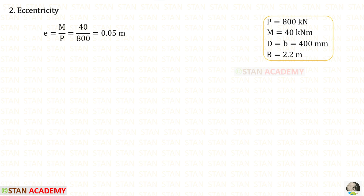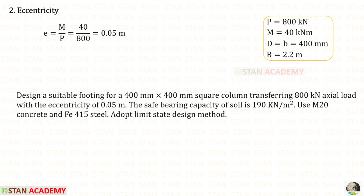Now we have to find the eccentricity E. The formula is moment divided by load. Both the moment and load are given in the question, so applying them gives an eccentricity of 0.05 meter. If the eccentricity is directly given in the question, this step is not required.